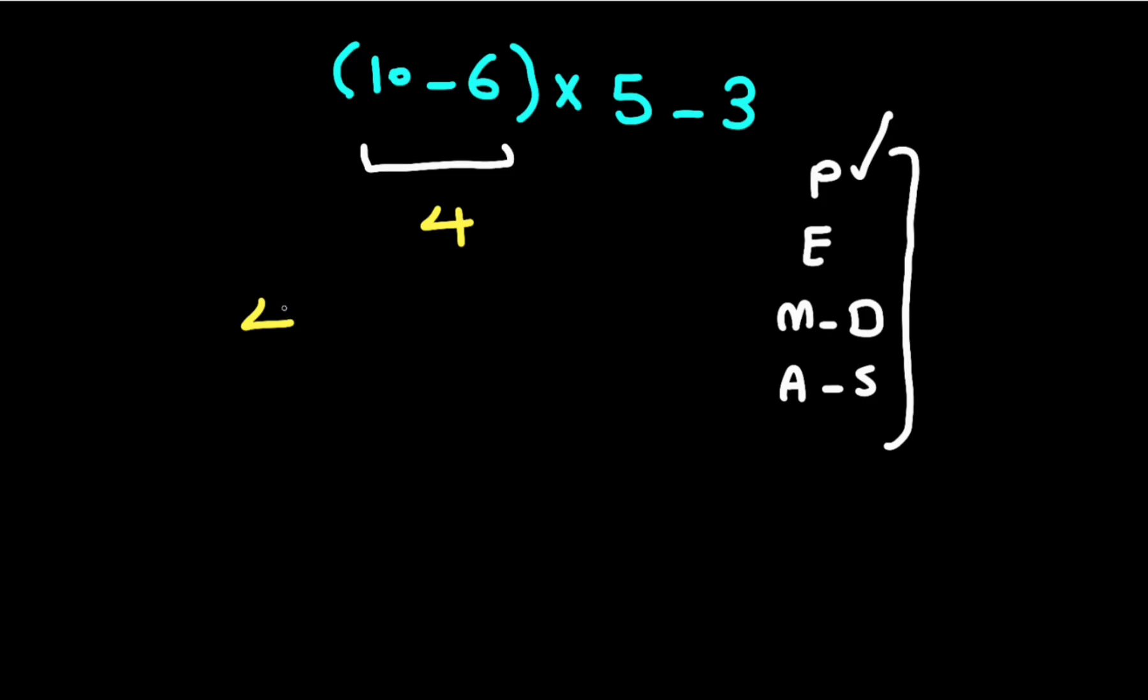Let's rewrite the expression. We have 4 times 5 minus 3. Now we have one multiplication and one subtraction. According to PEMDAS, multiplication and division have higher priority than addition and subtraction, so we have to solve this multiplication first.